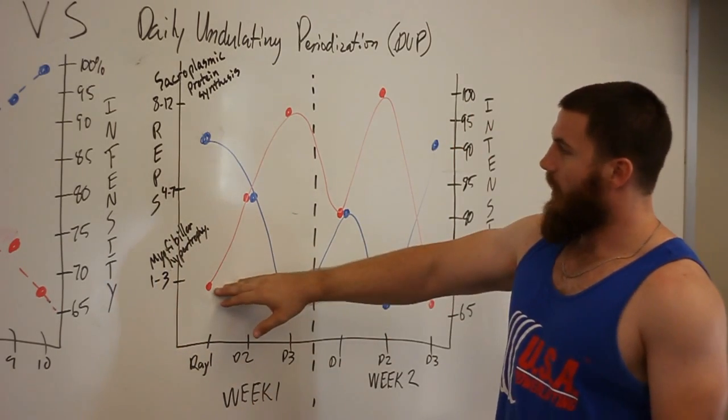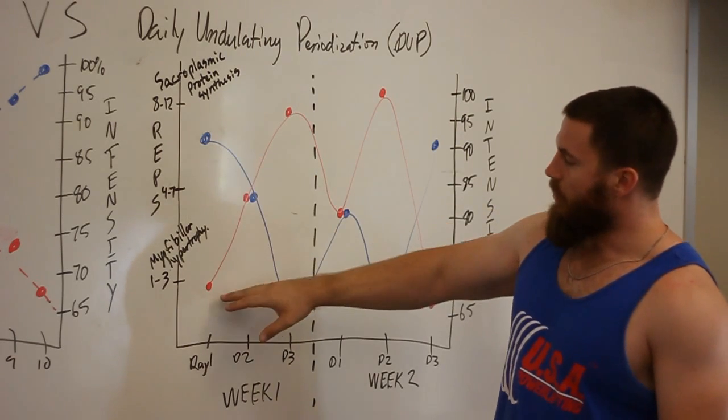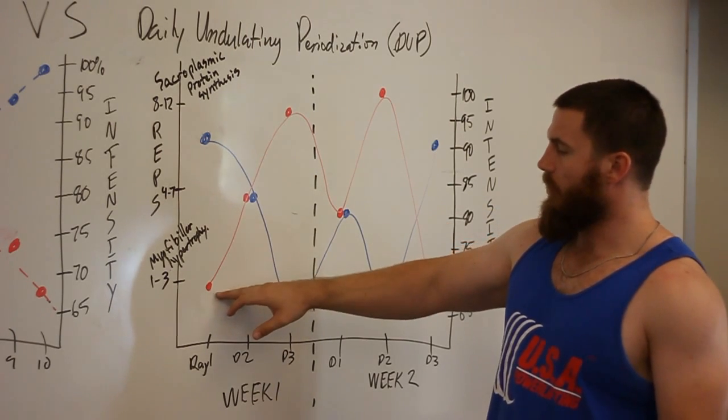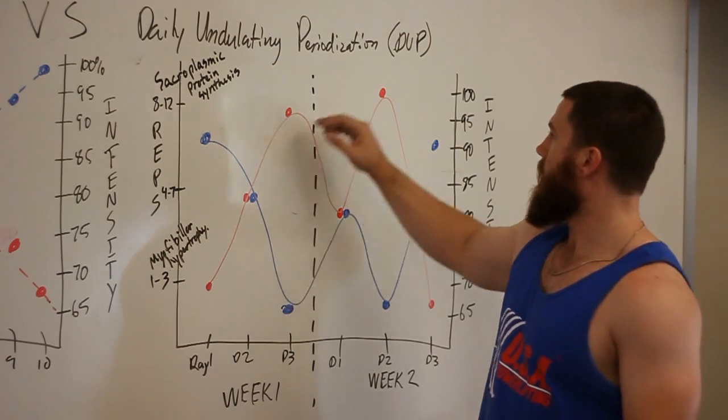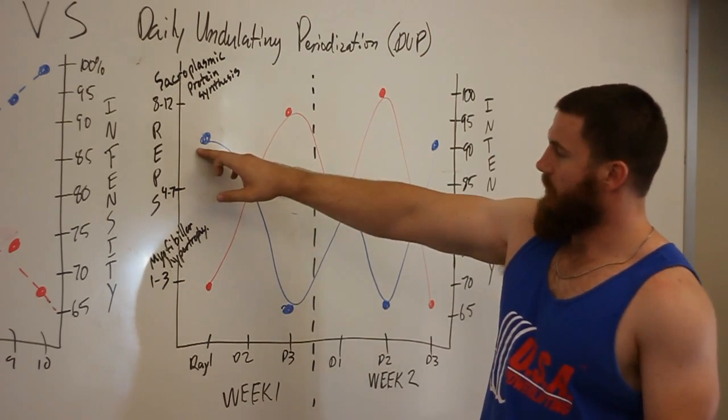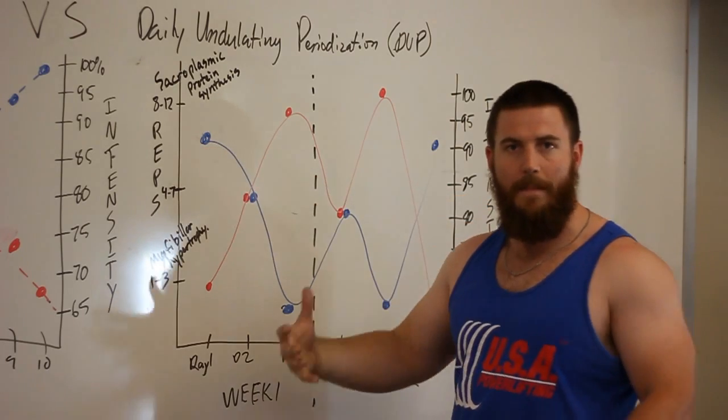Let's take the red line as volume and the blue line as intensity. Your volume is going to be low when you're doing these one to three rep ranges in daily undulating periodization. However, your intensity is going to be high. So you're working that maximal strength.